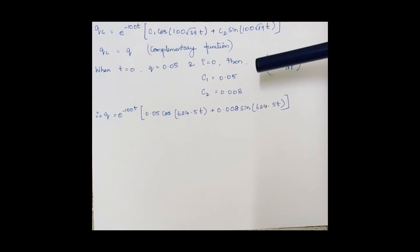Now i is given by dq/dt. On differentiating this and applying all these initial conditions, we obtain that c₁ = 0.05 and c₂ = 0.008. Substituting all these values, we obtain this as a solution for the given differential equation, which talks about charge and also talks about current when we differentiate the equation.